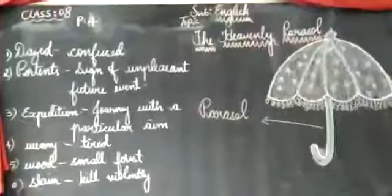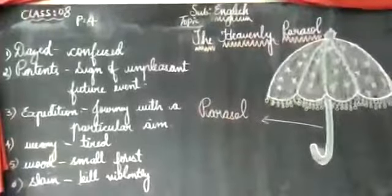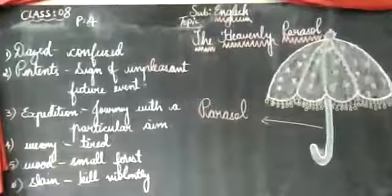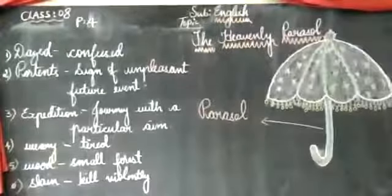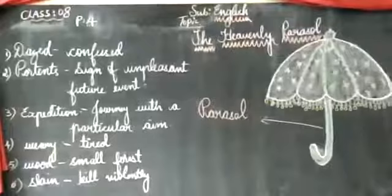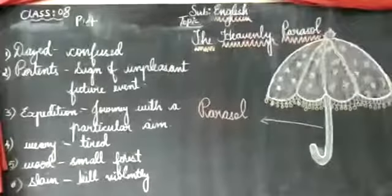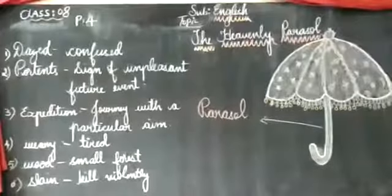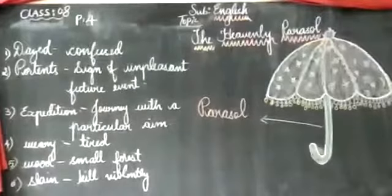So continuing with the lesson, the heavenly parasol, we learnt in the 24th paragraph that Megha Vahana wishes from Lord Varuna that he wants to cross the Indian Ocean and his wish will be fulfilled. So what happens is, look into the paragraph 25.